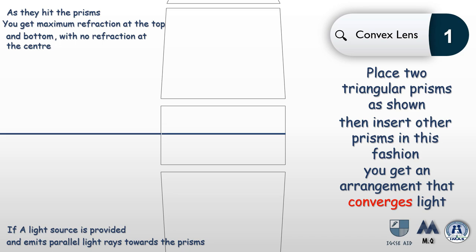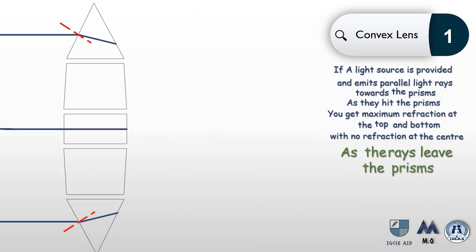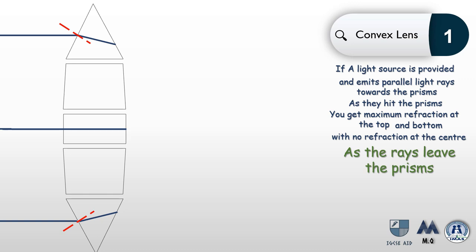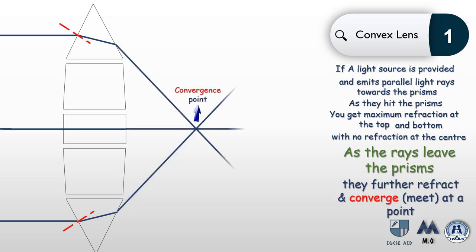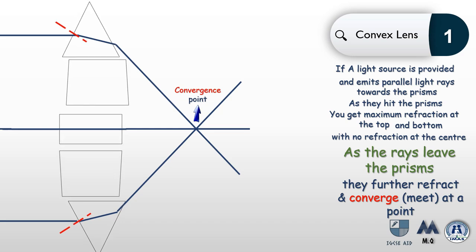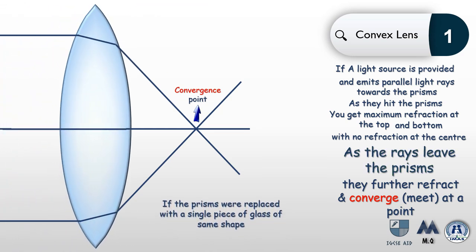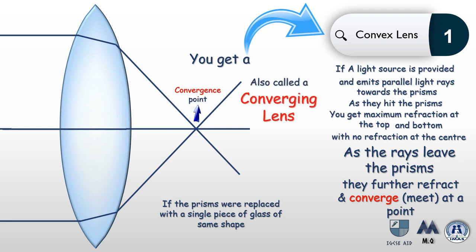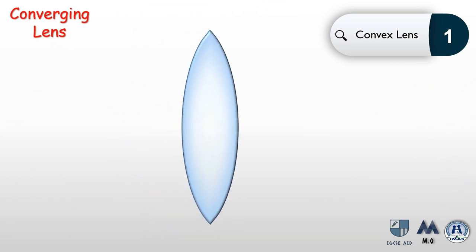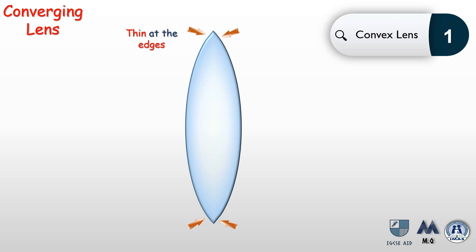However, there is no refraction at the center because the rays hit the surface perpendicularly. As the rays exit the prisms, they further refract and converge — meaning they meet at a certain point. If the prisms are replaced with a single piece of glass of similar shape, you get a convex lens, also called a converging lens. In general, the converging lens is thin at the edges to cause maximum refraction, but thick at the center to cause no refraction.